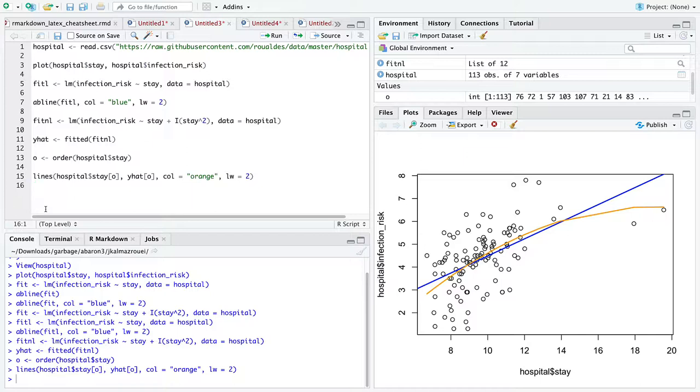So indeed, fitting a variable, x-axis variable, named stay, and then stay squared gives us a quadratic fit through the data, which is indeed nonlinear, as you can see here, even though that's still within the world of linear regression.